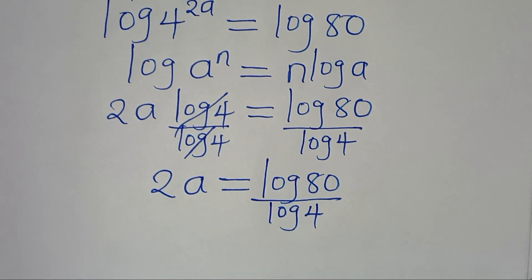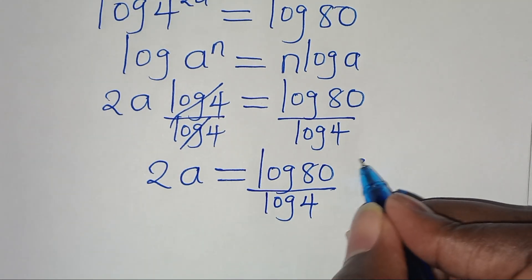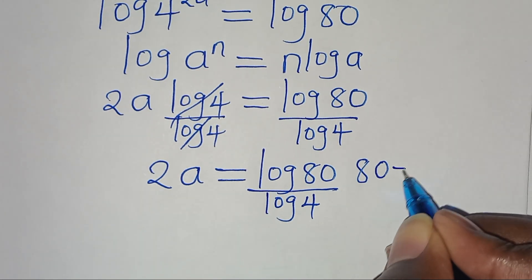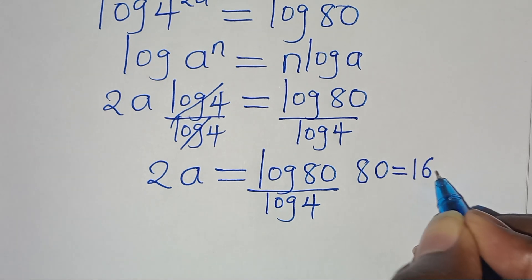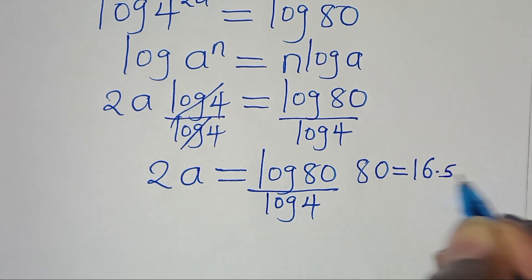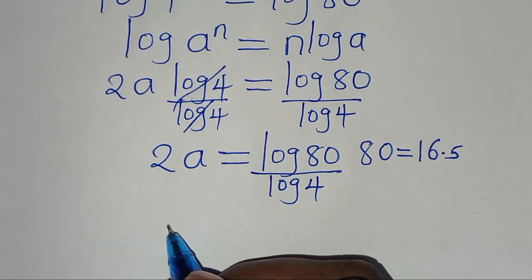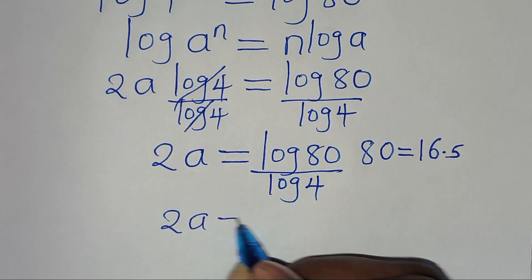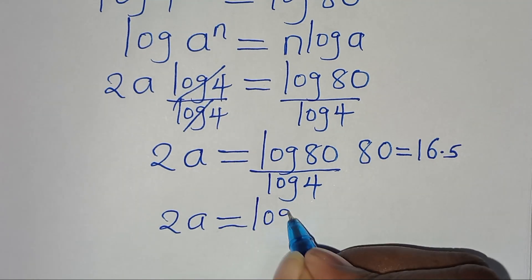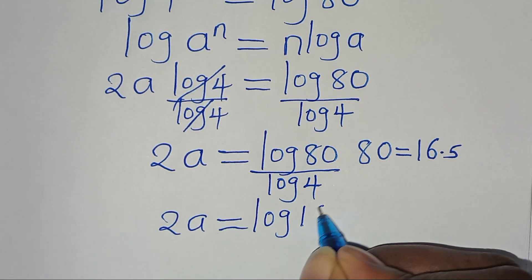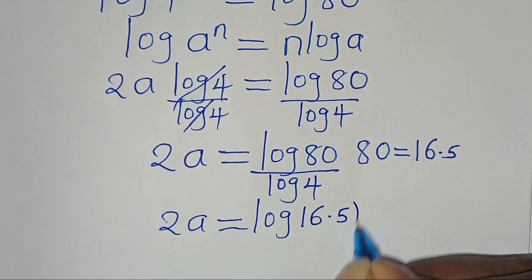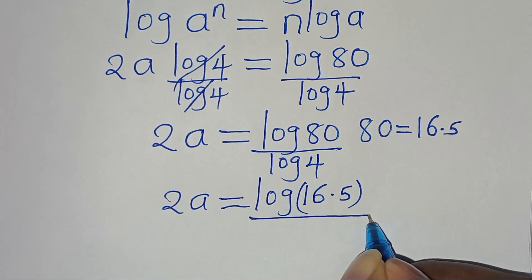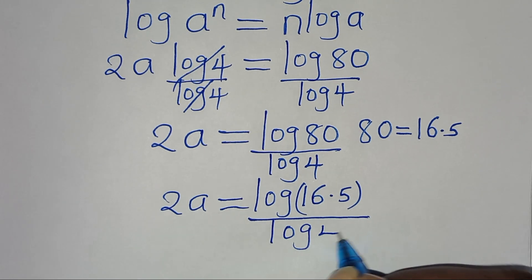From here we can express 80 as 16 multiplied by 5. This implies that we have 2a equals log(16 × 5), all divided by log 4.